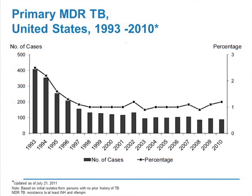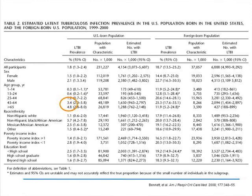Let's talk about latent TB infection — LTBI. What is the prevalence of latent TB infection in this country? Based on NHANES skin test data, in U.S.-born persons ages 45 to 64 and 65 and above, LTBI prevalence ranges between 3.4 and 4.8%. In the foreign-born population, these figures are 3 to 5 times higher. So LTBI is probably not very common in U.S.-born persons.